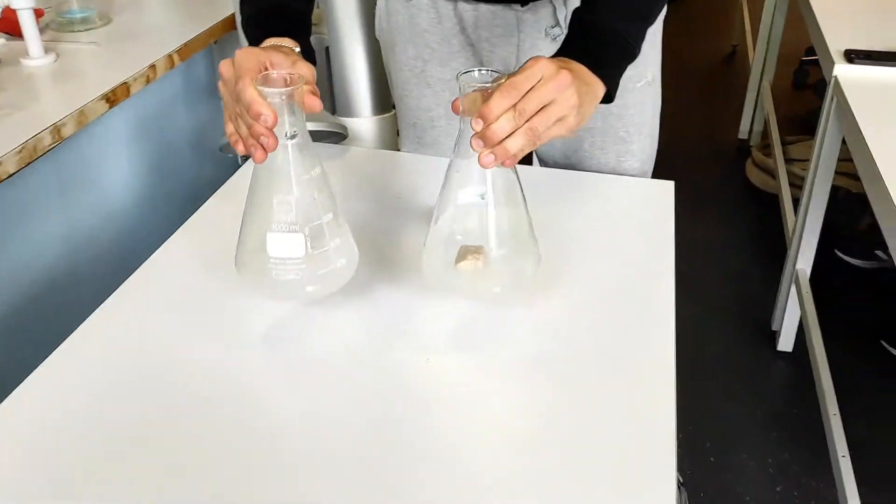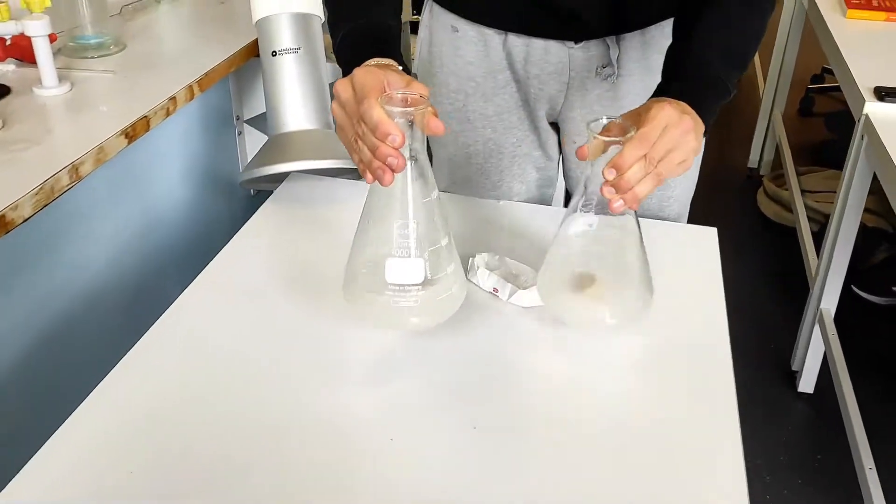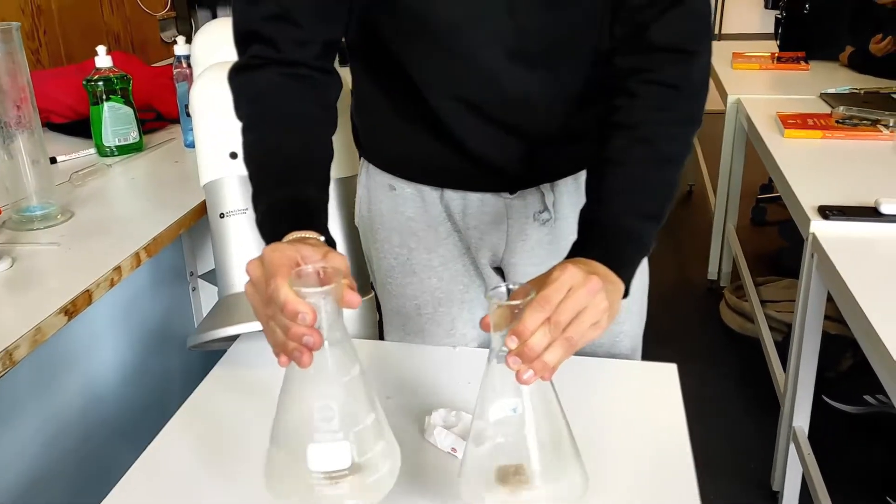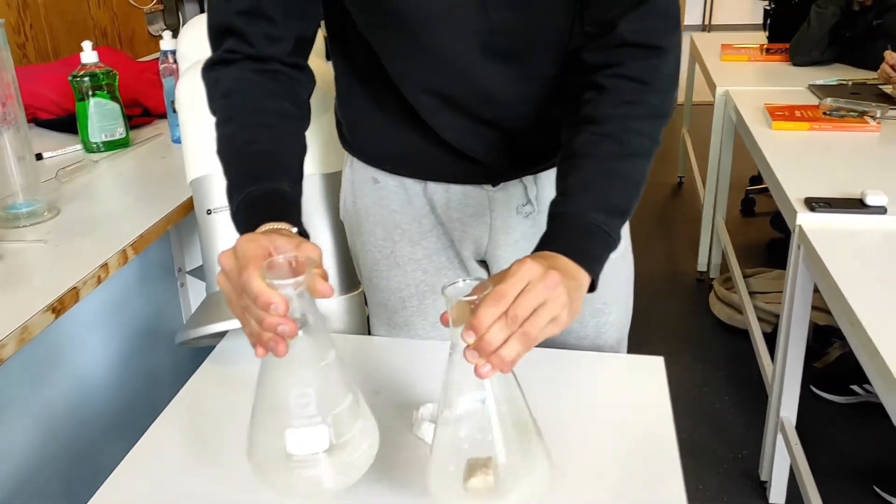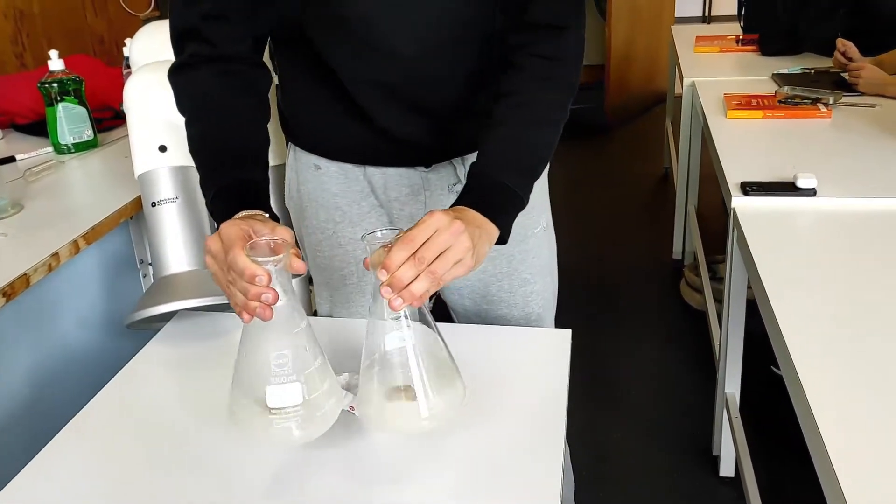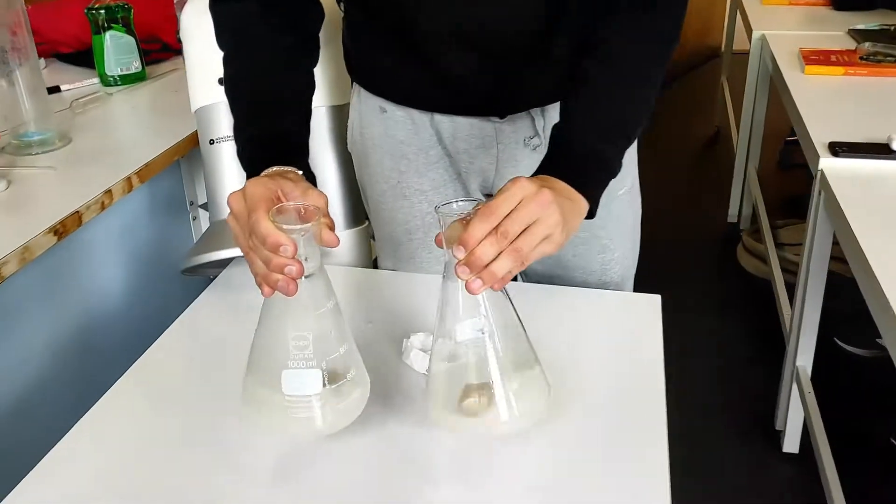Now, yeast here is a single-cell fungi which usually turns sugar into CO2, which is why when you bake with it, it makes the bread grow because that's what yeast do.